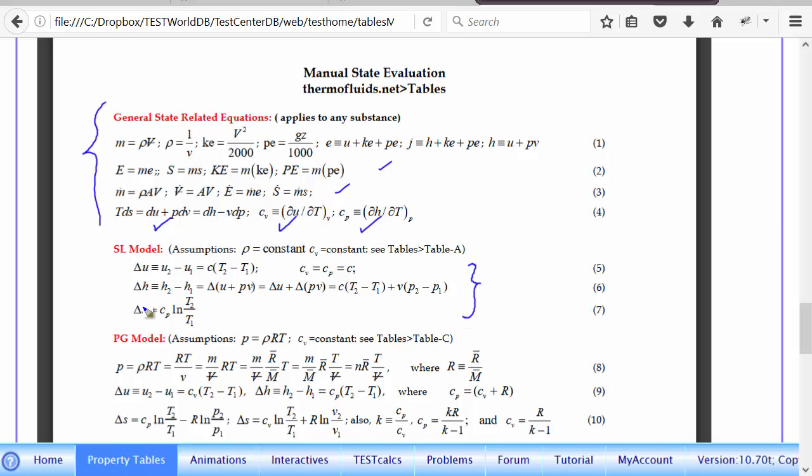Just one side note on the SL model. Suppose someone says entropy doesn't change in a process. Suppose water is flowing through a pump and for some reason entropy is not changing. If entropy doesn't change, ΔS = 0, then T2 and T1 must be equal because ln(1) is 0. So a corollary to that is: if S equals constant, this implies T equals constant for the SL model.